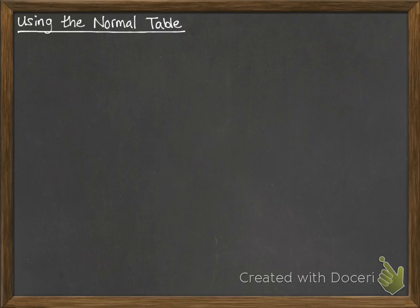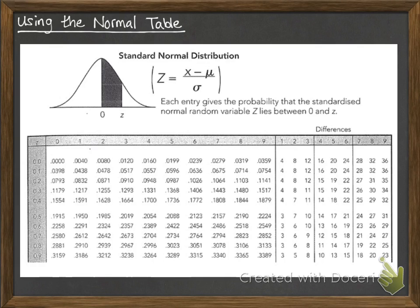Alright, we're going to have a look at how to use the normal distribution table. This is a table of values that you get as part of your formula sheet. And this is the formula sheet given to you for NCEA exams. This is just a snapshot of the top part of it. There is a lot more on the formula sheet itself.